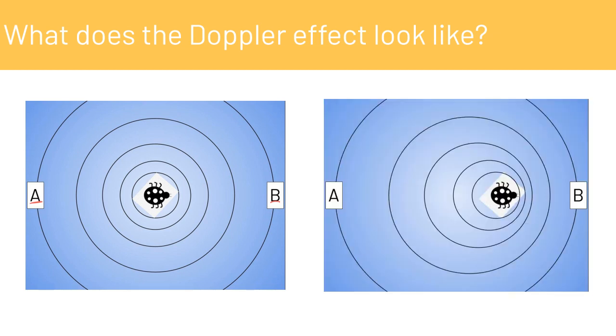However, if the bug begins to move towards B and away from A, even if the bug is still making waves every two seconds, and this is very important, the frequency of the waves doesn't actually change. However, what does change is the observation of the waves by B and by A.